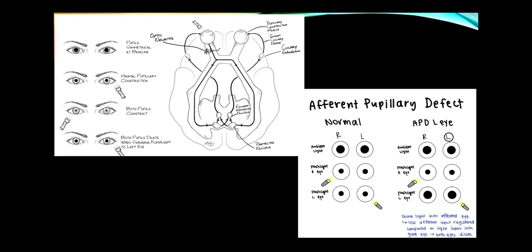For the optic nerve: if the lesion is anterior to the chiasm, the patient has monocular visual loss. At the chiasm, the result is bitemporal hemianopsia. Optic neuritis from multiple sclerosis is almost always of the posterior optic nerve, so the eye appears normal during the acute phase, but the patient has a severe central scotoma, loss of color vision (dyschromatopsia), and the objective finding of an afferent pupillary defect — both pupils dilate when the flashlight swings to the bad eye.